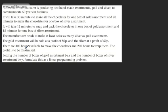Let's start off with a nice straightforward problem. We're told a chocolate manufacturer is producing two handmade assortments, gold and silver, to commemorate 50 years in business. It will take 30 minutes to make all the chocolates for one box of gold assortment, and 20 minutes for one box of silver. It will take 12 minutes to wrap and pack one box of gold, and 15 minutes for one box of silver. The manufacturer needs to make at least twice as many silver as gold assortments. The gold assortments will be sold at a profit of 80p, and the silver at 60p. There are 300 hours available to make the chocolates, and 200 to wrap them. The profit is to be maximised. Letting the number of boxes of gold be x, and the number of boxes of silver be y, formulate this as a linear programming problem.